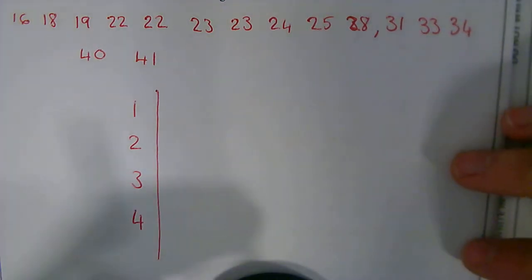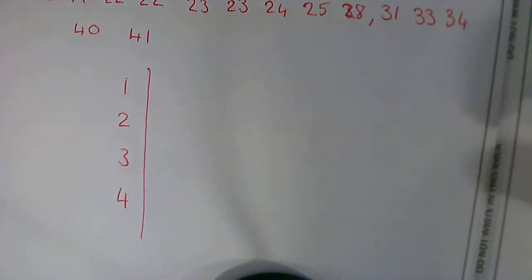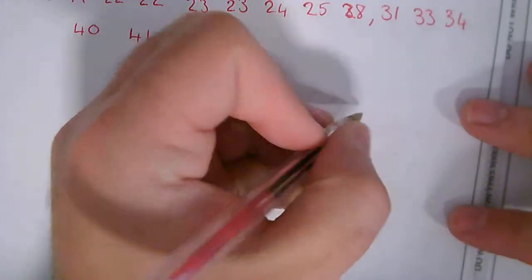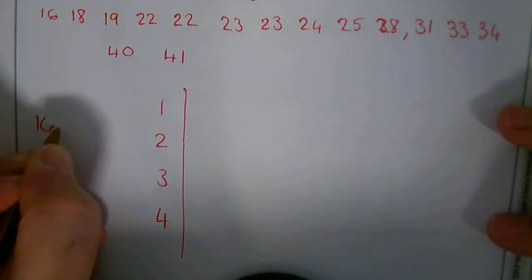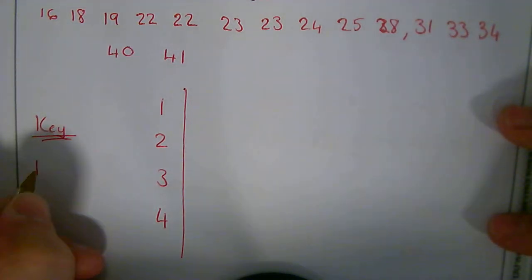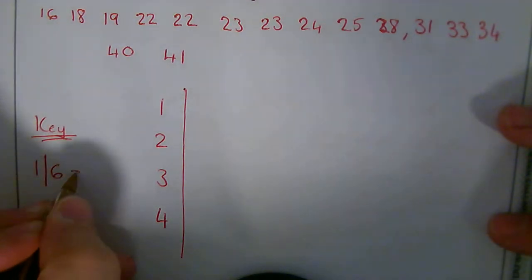And then my leaf is the single digit from each number, in order. But before I put that, I'm going to just put a key. I'm going to label it: 1 line 6 equals 16.